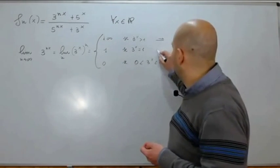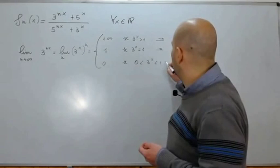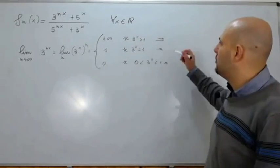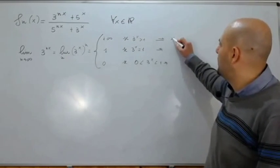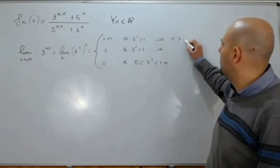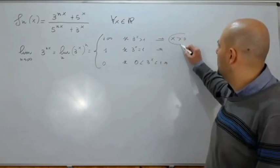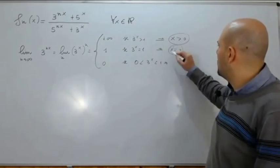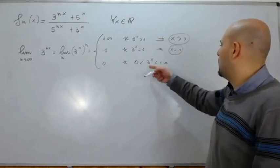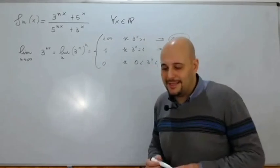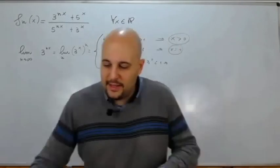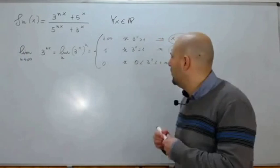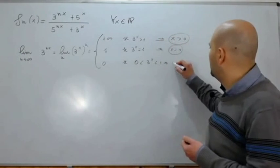I tre casi che andremo a considerare sono: 3^x > 1, cioè 3^x > 3^0, quindi x > 0; poi x = 0; e infine, visto che 3^x è sempre maggiore di 0, 3^x < 1 quando x < 0.